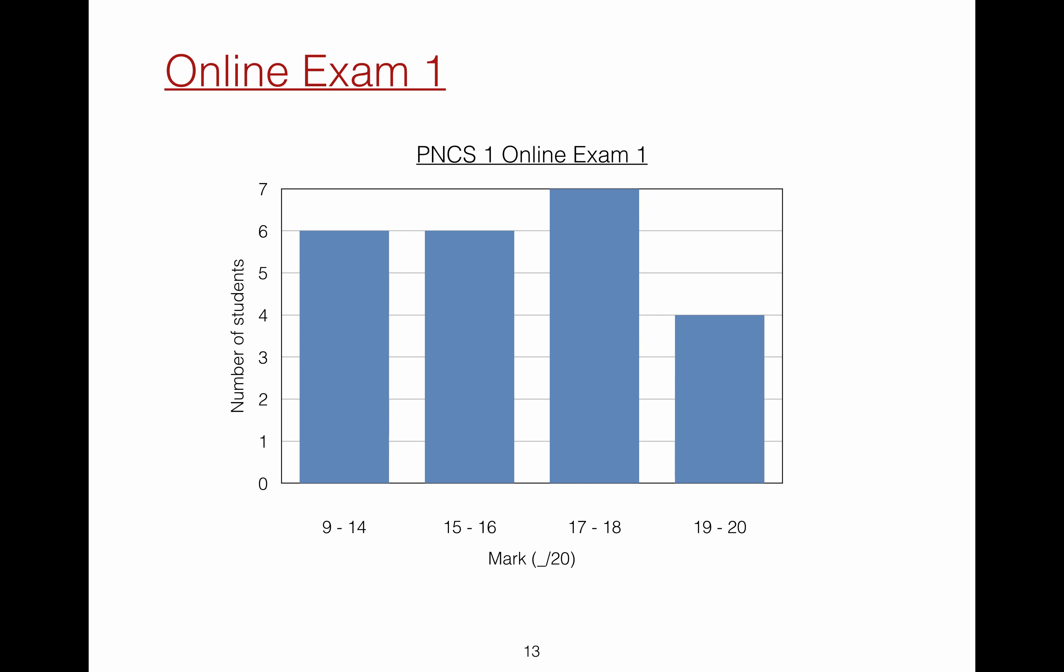This graph shows a distribution of the marks in the first online exam. The first online exam being out of 20. Six students scored between 9 and 14. Six students, 15 or 16. Seven students, 17 or 18. Four students, 19 or 20.